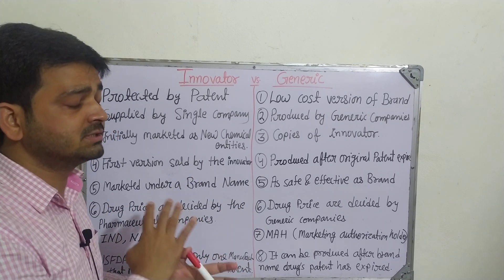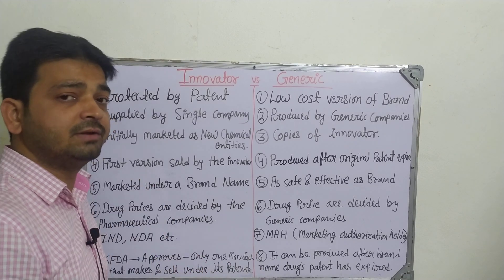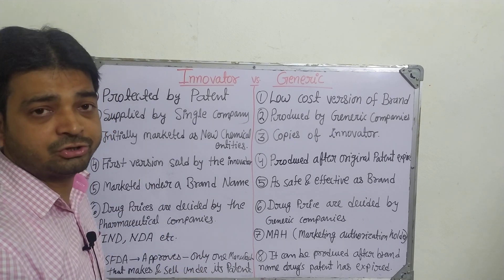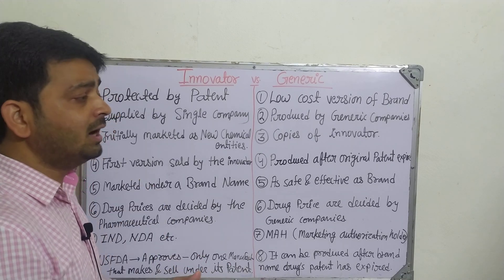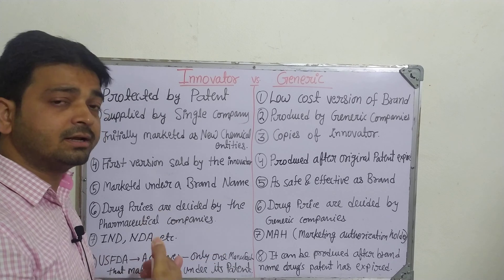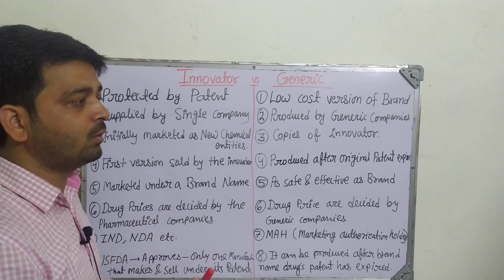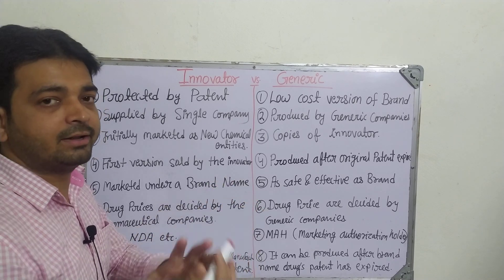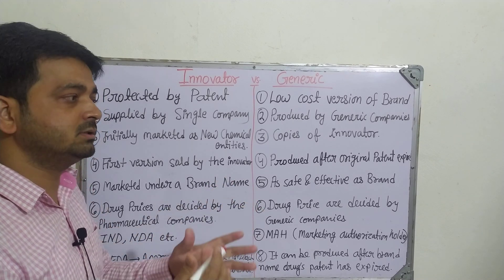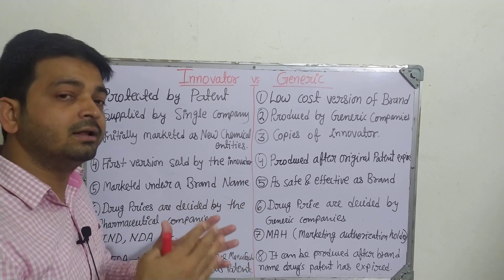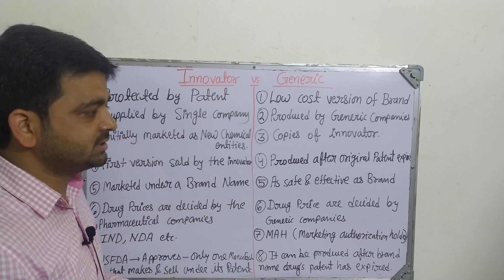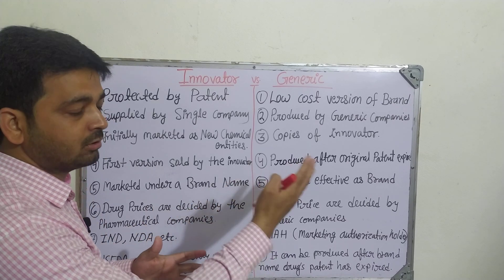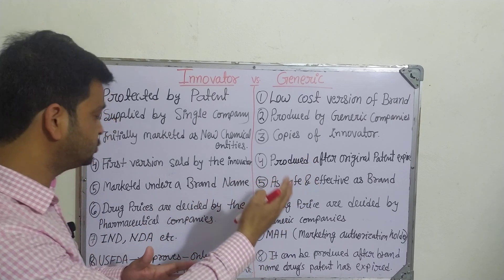After the patent expires, the government — the FDA — will give the authority to produce. But further approval is still required. It is not that the patent expires and you start manufacturing. There is also a certain approval process that a generic drug must go through.